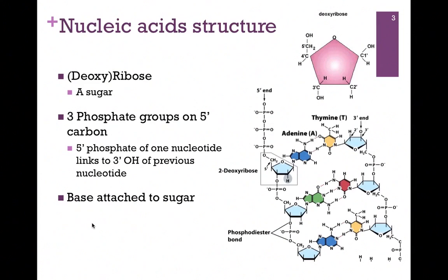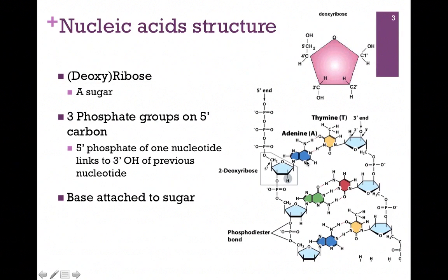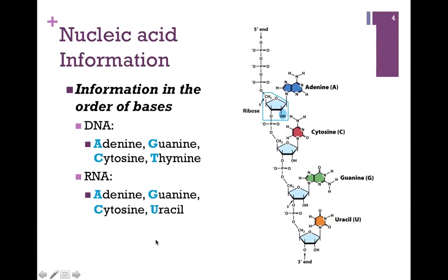Let's first review the structure of the DNA molecule. Our sugar in this case is deoxyribose, illustrated at the top of the screen here. We're missing the oxygen at the two prime position — that's what makes it a deoxyribose. When we form the nucleic acid structure, at the five prime end we have three phosphates. The polymer is connected by joining the five prime phosphate of one nucleotide to the three prime OH of the previous nucleotide, forming our phosphodiester backbone, and the base is attached to the sugar. The information for transcription and translation — converting this into a sequence of amino acids and proteins — is in the order of the bases.